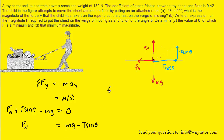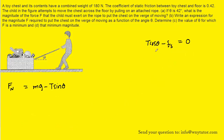We'll turn to the sum of the forces in the x direction and set that equal to ma. The toy chest also is not accelerating in the x direction, so the right-hand side will also be zero. We have two forces acting in the x direction: the positive T cos theta and then the negative static frictional force. We recall that the static frictional force can be written as the coefficient of static friction multiplied by the normal force, and we will substitute the expression for normal force solved earlier.